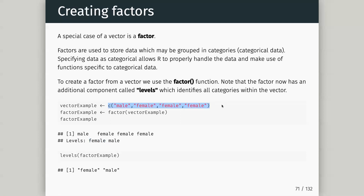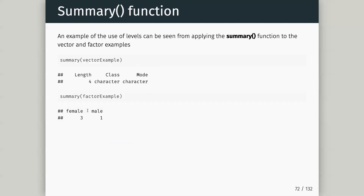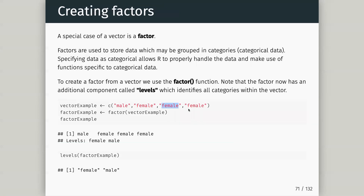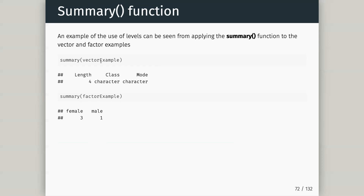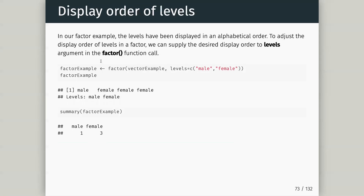One thing we can do differently: if I run summary on a vector it gives me the class and length. But if I do summary on a factor it gives me the occurrence — it's already done a type of statistical transformation, telling me how often female was in there and how often male. So summary will do something different on a factor than it does on a vector.